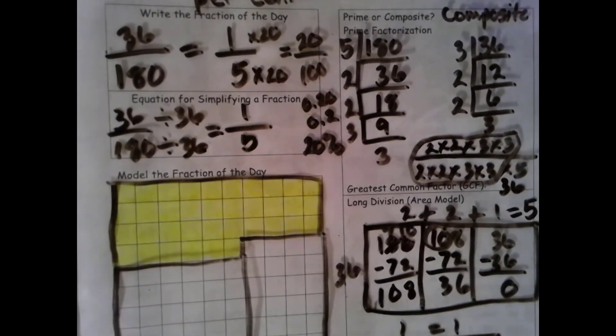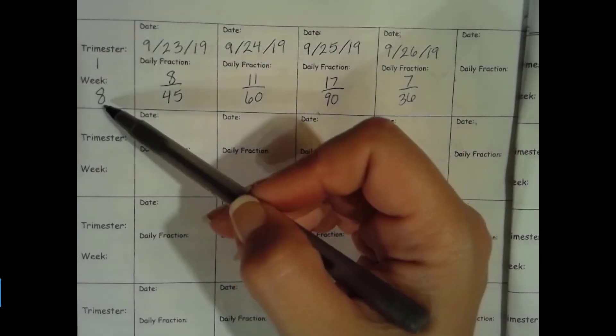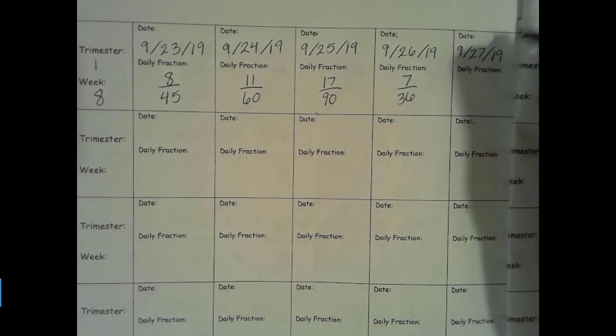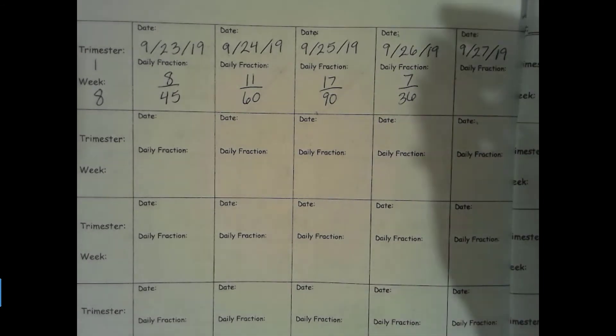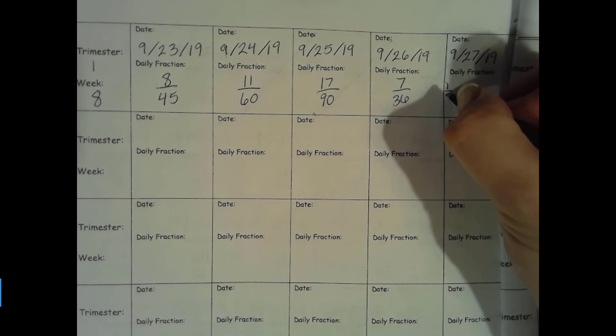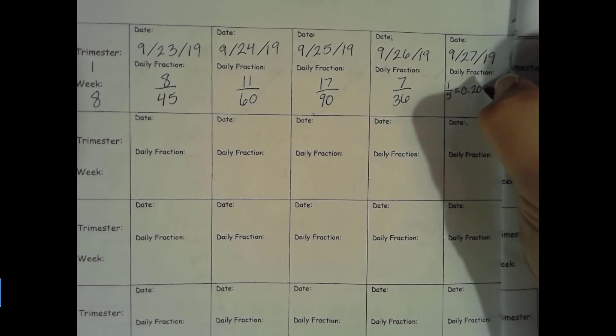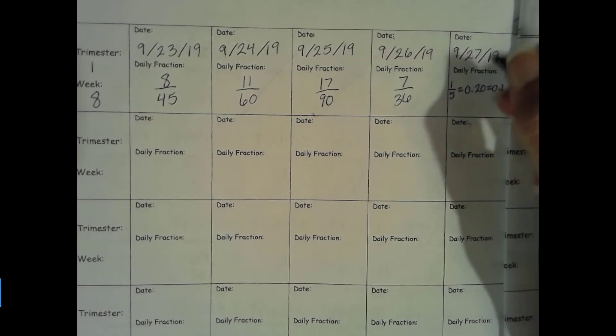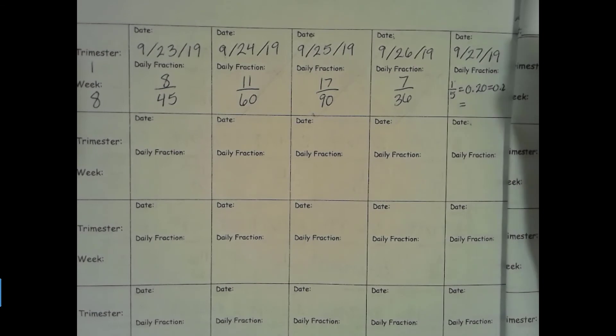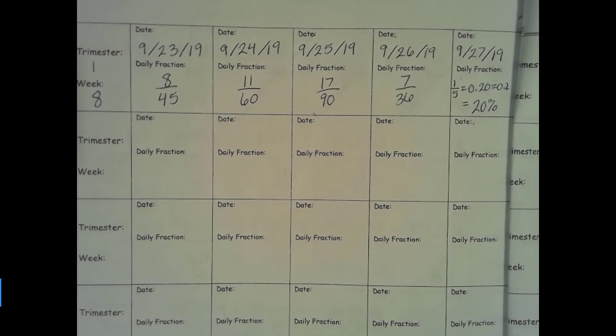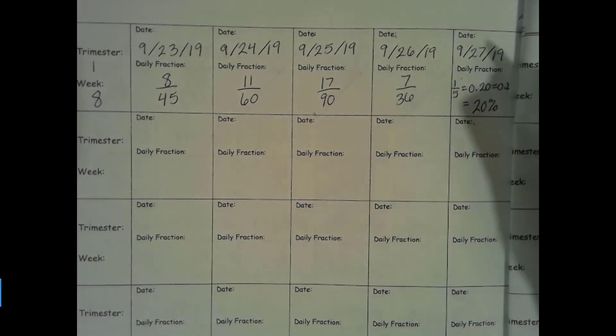So let's go ahead and fill in our data collection page. Okay, trimester 1, week 8. Our date today is 9-27-19. Our fraction for today, we have completed 1 fifth of the school year, which is equivalent to 20 hundredths, which is equivalent to 2 tenths, which is equivalent to 20% of the school year. Completed 20%. We have 80% of the school year left to go.